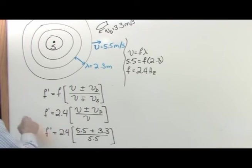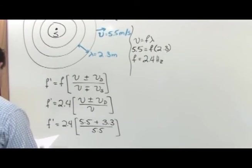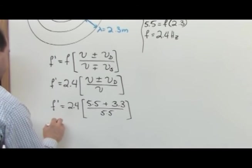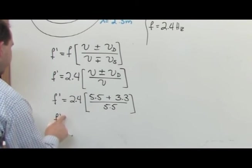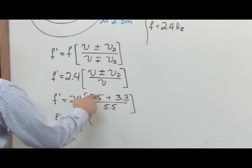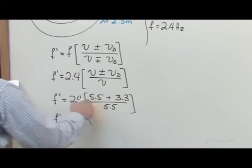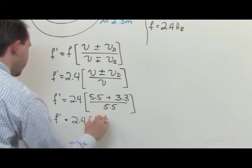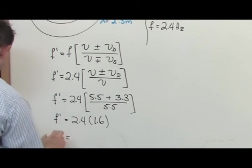Now it's just calculator, right? 2.4 times this, 5.5 plus this divided by this, is going to give you 1.6. So the Doppler shifted frequency is going to be 3.8 Hertz.